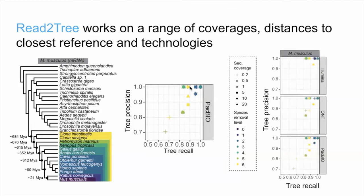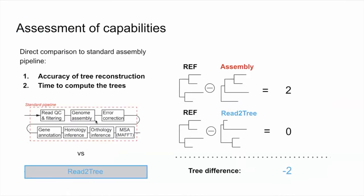This example uses PacBio as the sequencing technology. We can also look at Illumina and Oxford Nanopore technologies, and we see that we do a similarly good job. Even for Illumina, we do an extremely good job placing the species in the correct position and producing a tree very similar to our standard reference tree. This gives us a good understanding that our tool, depending on technology and coverage, does a reasonable job of placing species correctly and computing quite accurate trees.